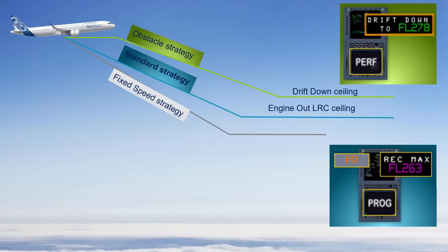The drift down ceiling on the PERF page corresponds to the obstacle strategy at green dot speed, or the flight level for the selected ETOPS diversion speed, corresponding to the fixed speed strategy. Now let us take a look at the details of these strategies and, more importantly, when to apply them.